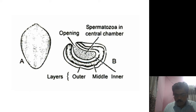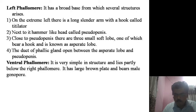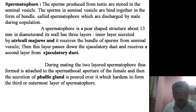The sperms formed from the testes are glued to each other to form packets called the spermatophore. The spermatophore is produced from testes — the sperm present in the seminal vesicle bind together to form a bundle called the spermatophore. It is a pear-shaped structure with three coverings around it and has a size of 13 millimeter diameter.